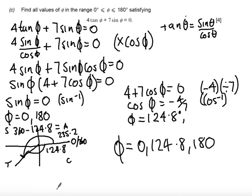Part C gives you a method mark if you've got to this stage where you've used tanθ in some way to get the expression 4sinθ + 7sinθcosθ. Then a method mark for getting sinθ = 0 and 4 + 7cosθ = 0. Finally, if you've got 0 and 180 degrees you get one answer mark, and if you've got 124.8 you get another answer mark.